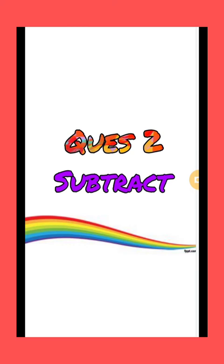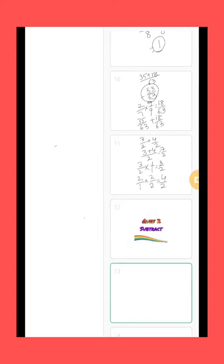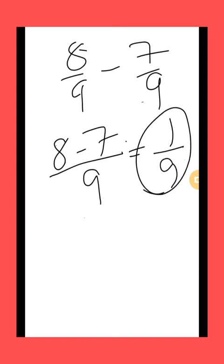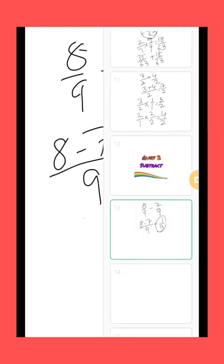Question 2 is subtract. The same procedure you have to follow as you did in addition, except instead of adding, you subtract. Now see the first question of subtraction: 8 by 9 minus 7 by 9. We will follow the same procedure as with like fractions. First of all we will subtract the numerators — 8 minus 7 — keeping the denominator same. 8 minus 7 is equal to 1 by 9. So our answer is 1 by 9.